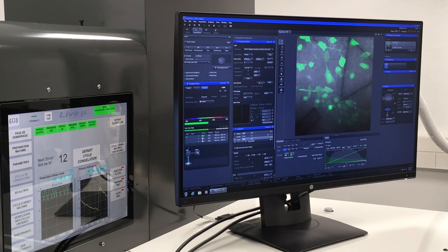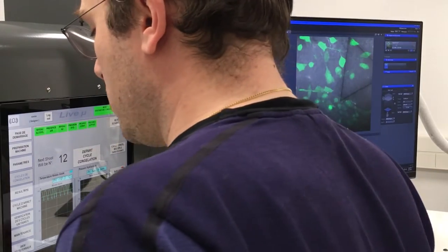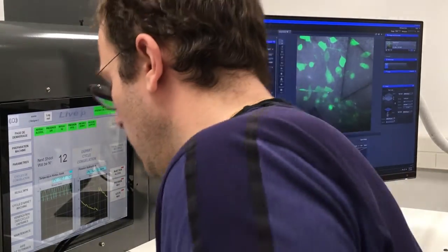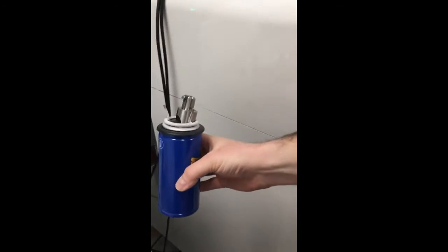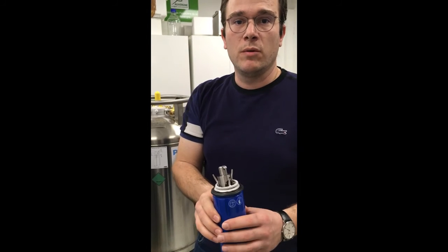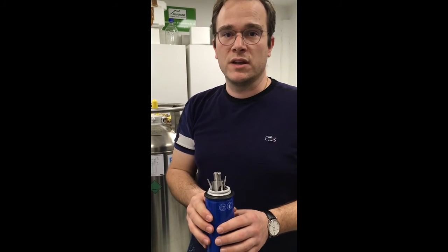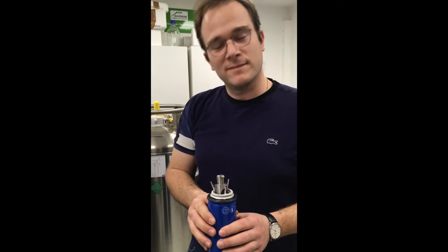Once you've identified the sample of interest, just use the system and high-pressure freeze. The sample is restricted. Now we can continue with the sample for high-pressure freeze substitution or cryo imaging depending on your scientific question. Thank you!